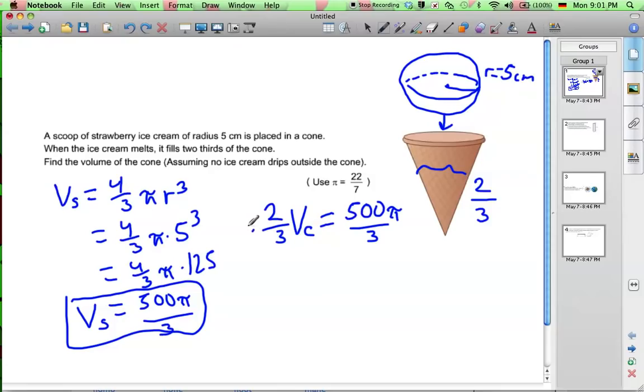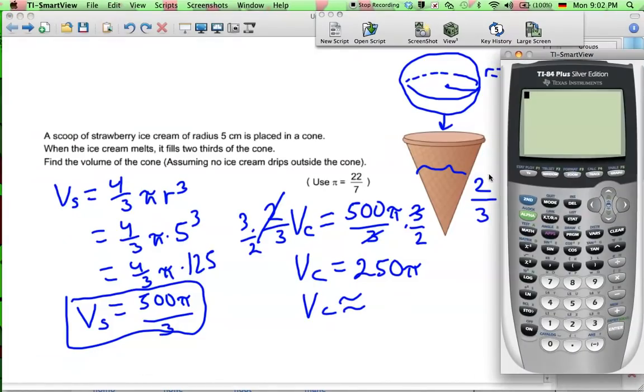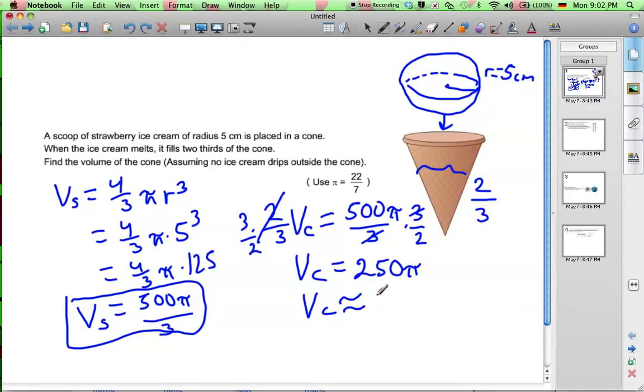So to get rid of this two-thirds here, we can multiply both sides by three out of two. We get the volume of the cone equals, here the threes cancel. 500 divided by two is 250. We get exactly 250 pi. If we work out an approximate answer on our calculator, 250 times pi, 785.4. So here we get 785.4 cubic centimeters, or you can write that as 785.4 milliliters.